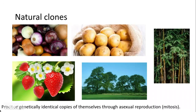For example, strawberries can grow out their stems in the soil to create new plants that will then grow roots and establish somewhere else. Elm trees can extend their roots across in the soil. Potatoes can grow tubers from within their skins and form new plants from those. Onions and bamboo are also plants that can create natural clones.